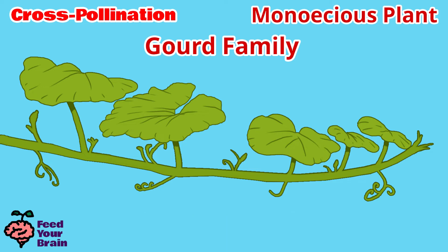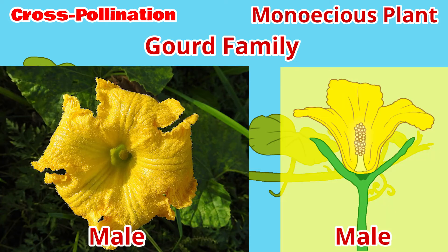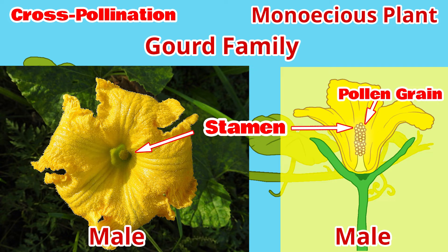For example, on this vine, here is the male flower. You can identify it by two features: first, you will see just the stamen in the middle, with the anther on top covered in pollen. Second, which is easier to see, you'll see just the thin stem, or pedicel, below the petals.